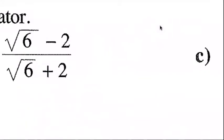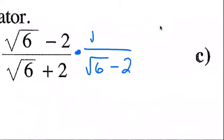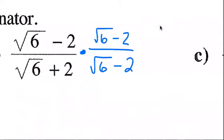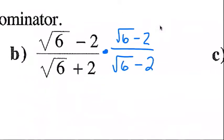You do the conjugate of the denominator, which is going to be square root 6 minus 2, and the same on the top. And then of course we do our FOIL — first, outside, inside, last.